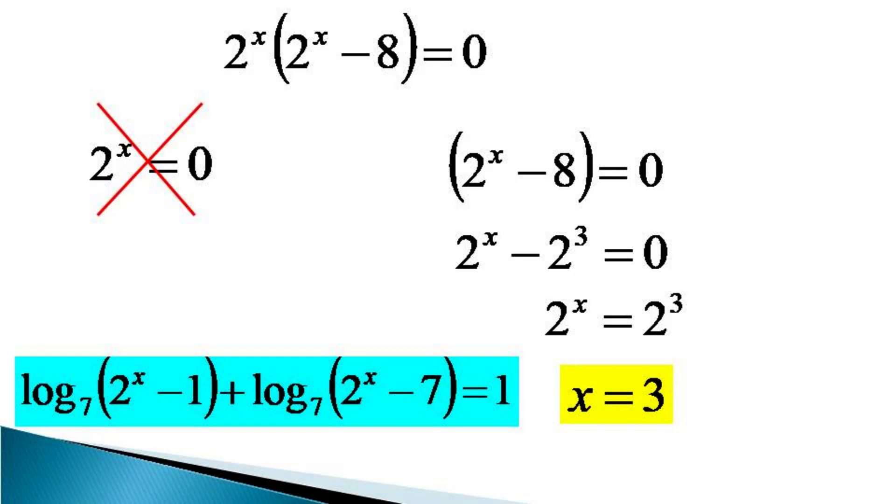Again for the curiosity sake, we can consider 2^x = 0 and we can see that if we put 2^x = 0, even for x = minus infinity, the logarithmic terms become negative and hence this is not a solution.